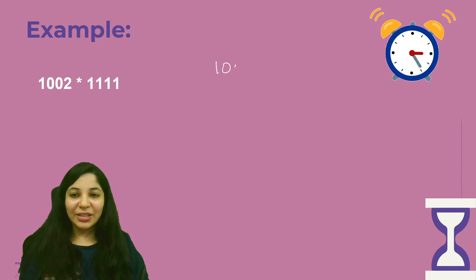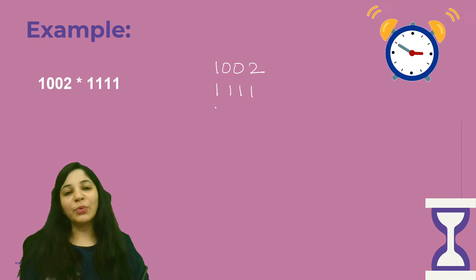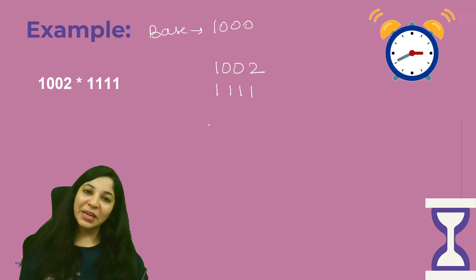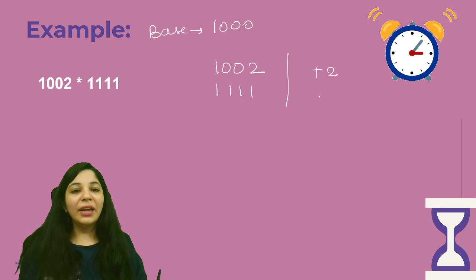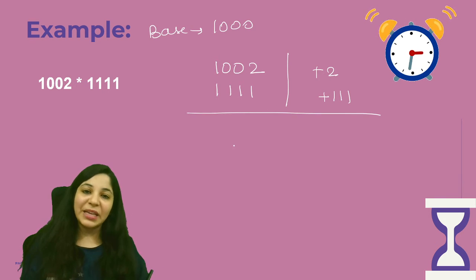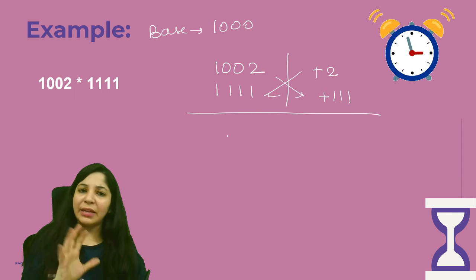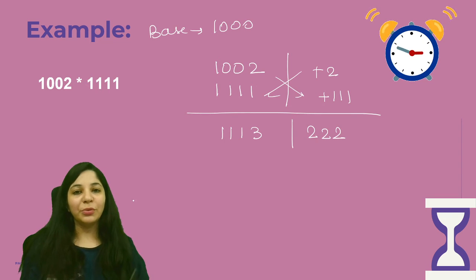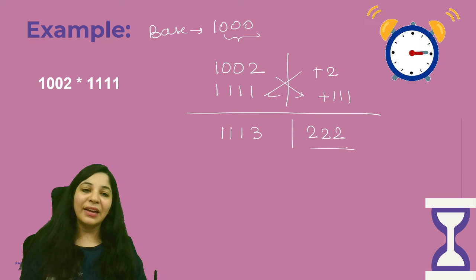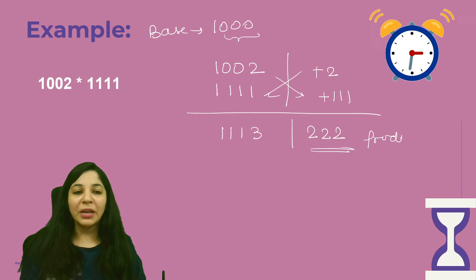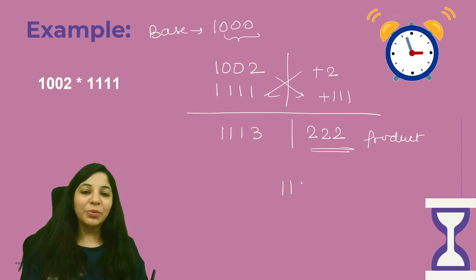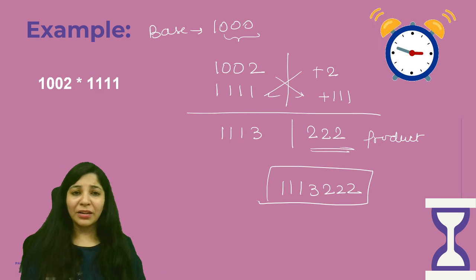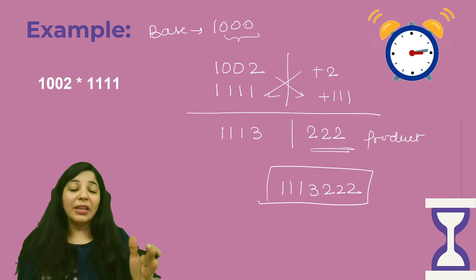Let us do one more question. 1002 and 1111. Here the base is going to be 1000. This is 2 more and this is 111 units more than the base value. Sum will be 1113 and the product is 222. Base has 3 zeros and exactly 3 zeros are in the product. So I don't have to do anything else. This is the answer of this product. Multiplying two numbers, in fraction of seconds it's possible. The thing that you need is practice.